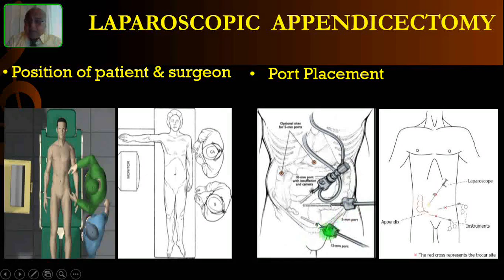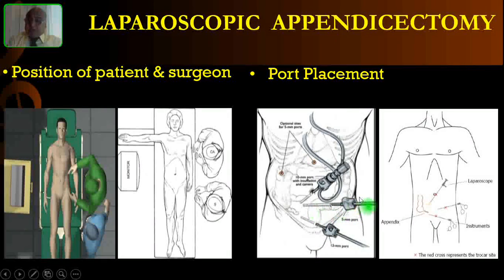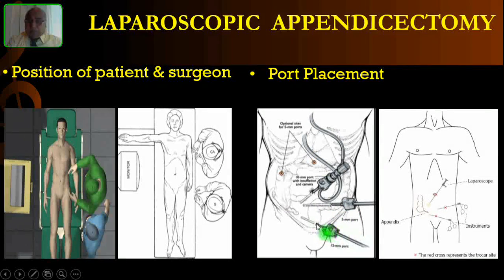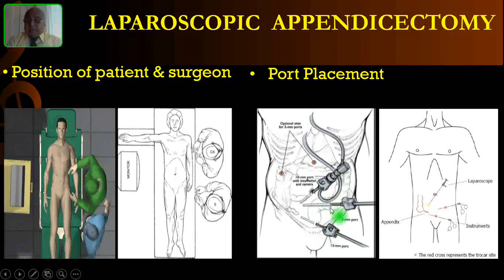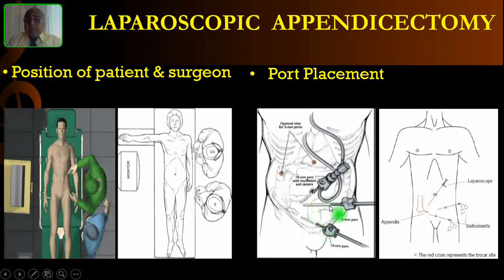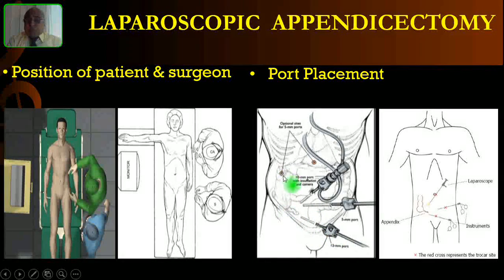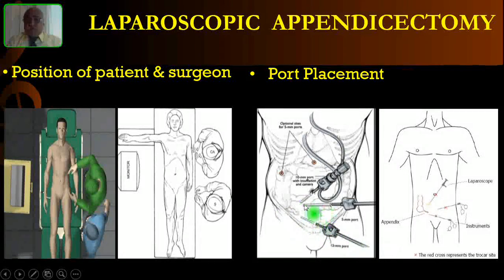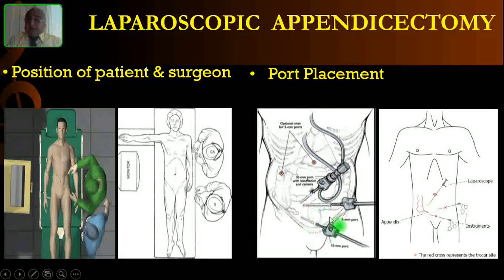The secondary ports: in the left iliac fossa you can use a 5mm port, and the suprapubic port can be 5mm or 10mm if you want to use it as the camera port. These are the three ports typically used. Some surgeons prefer to place a port in the right iliac fossa instead of the suprapubic port — this depends on the surgeon's preference.